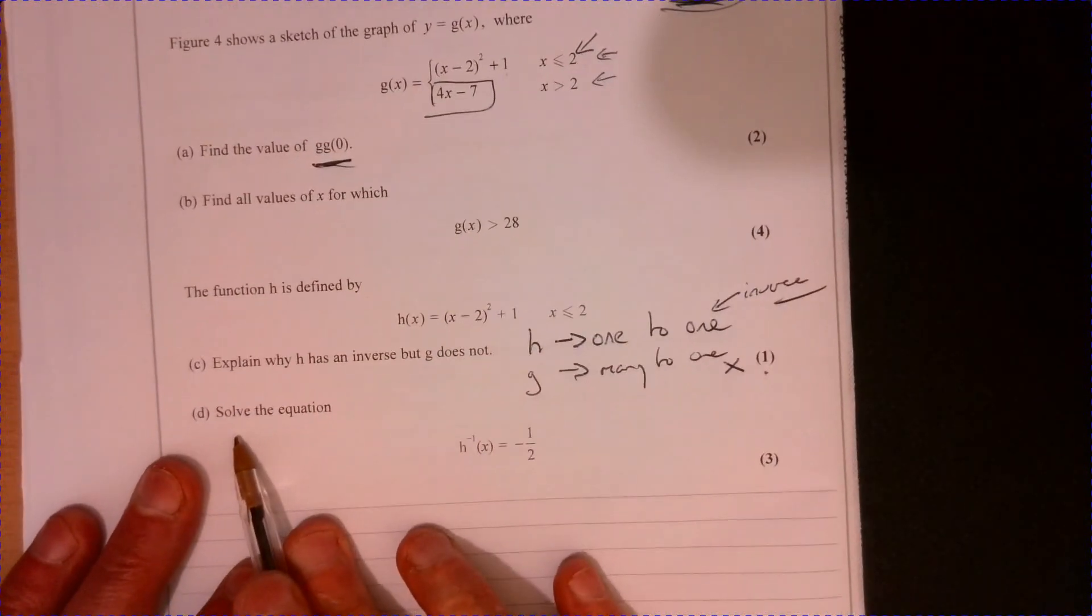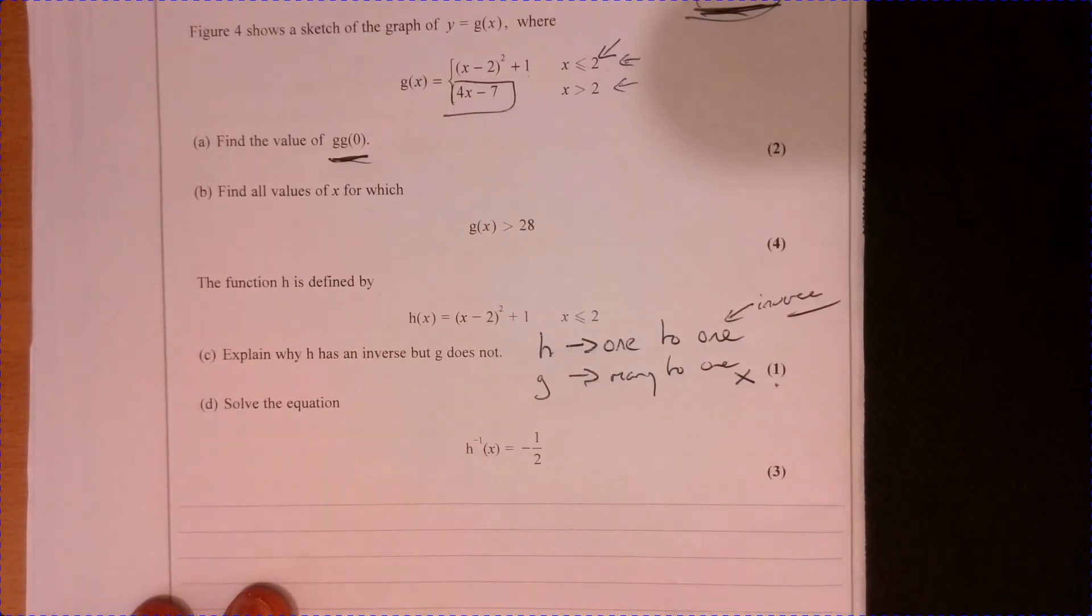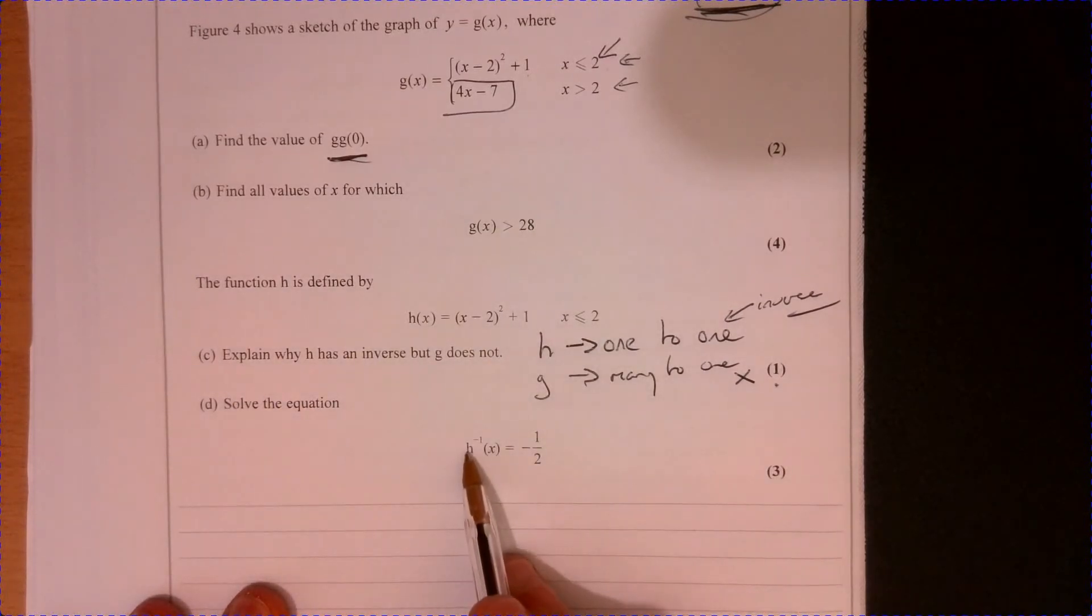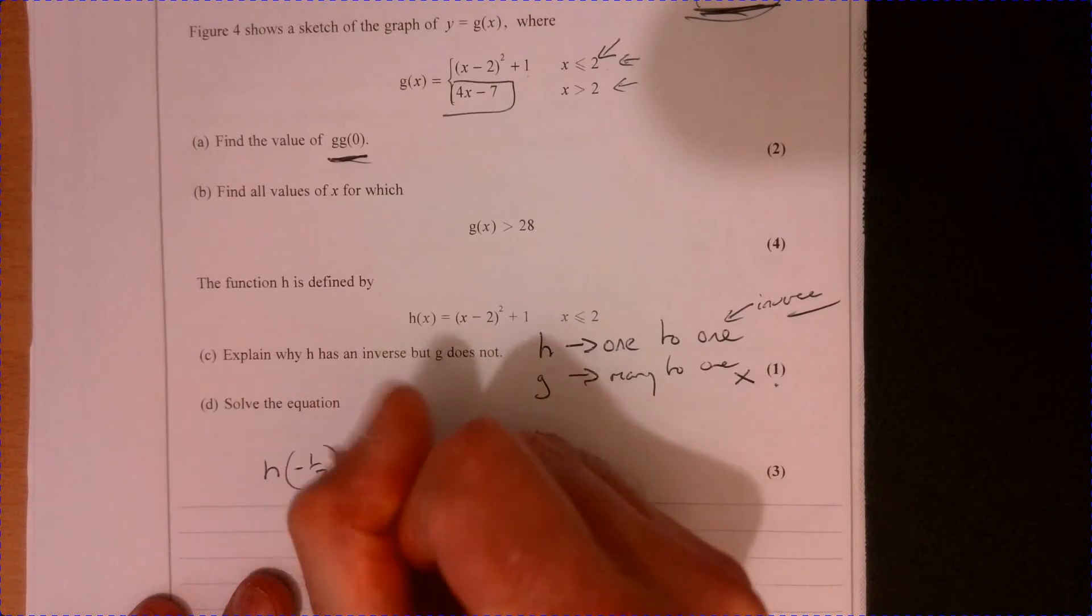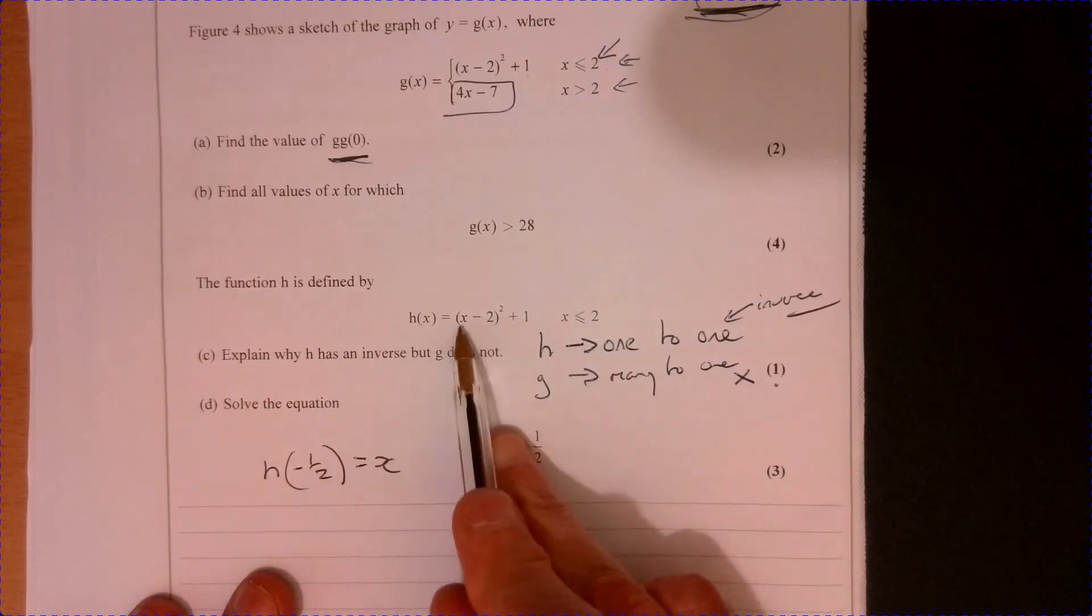And what are we, of course, to do on part d? Well, part d, it's probably easier to think about this. It just means, so it's only inverse function of x is equal to minus a half. Well, all that means is that h of minus a half into h equals x. So what you've got to do is just substitute minus a half into this here.